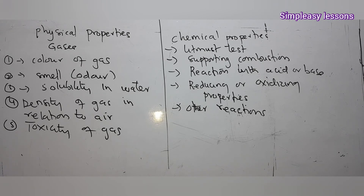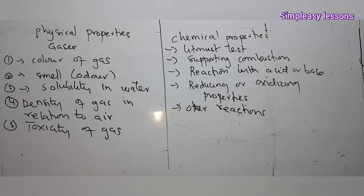Under chemical properties, we discuss the litmus test — whether the gas turns litmus paper blue or red. We also look at supporting combustion, whether the gas burns to produce water, reactions with acids or bases, and whether the gas acts as a reducing or oxidizing agent. In the next video, we will take individual gases and look at preparation, physical properties, chemical properties, and uses. Don't forget to subscribe and keep learning!